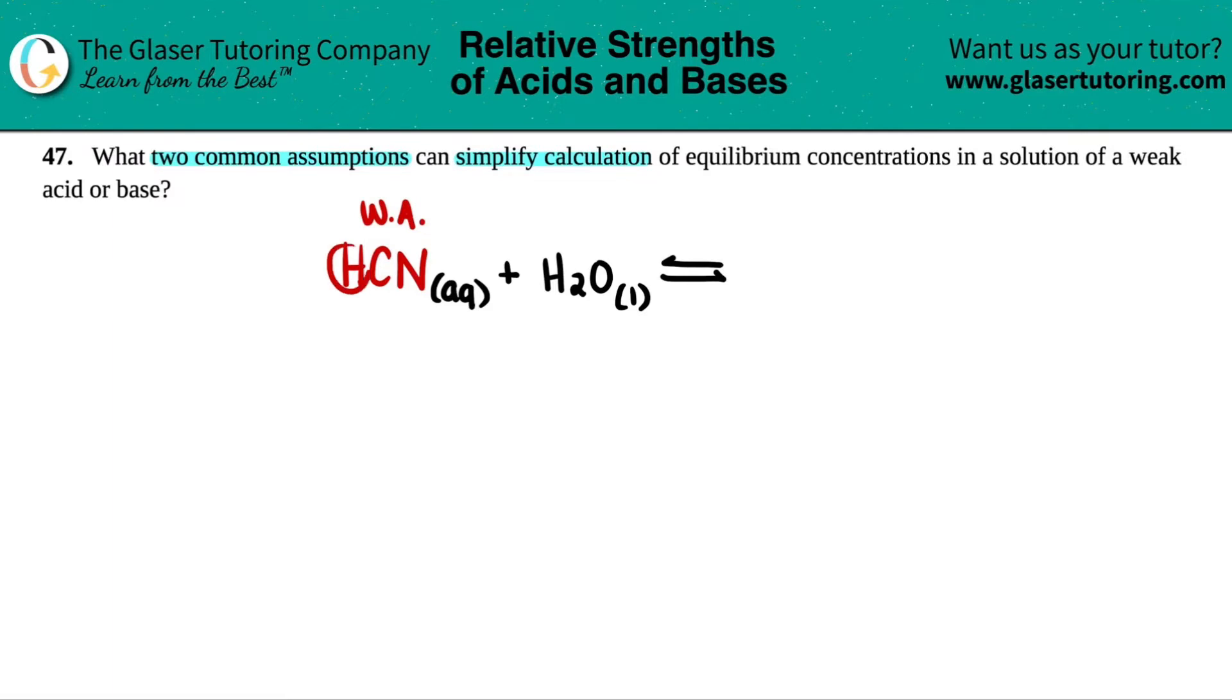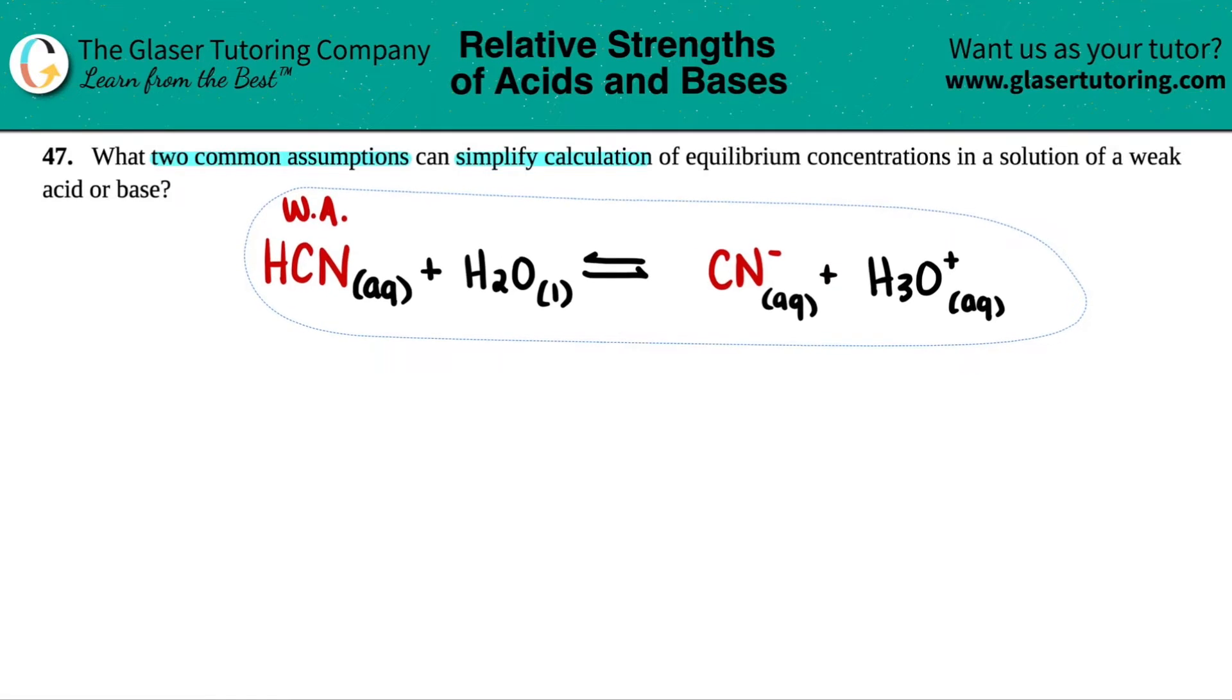Acids will donate the hydrogens to the conjugate base or the base. So CN minus will become, because no more hydrogen, and the H2O picks up the hydrogen. So instead of it being H2O, it's H3O plus. Since these are charged, these are aqueous. So we just found our balanced equation.